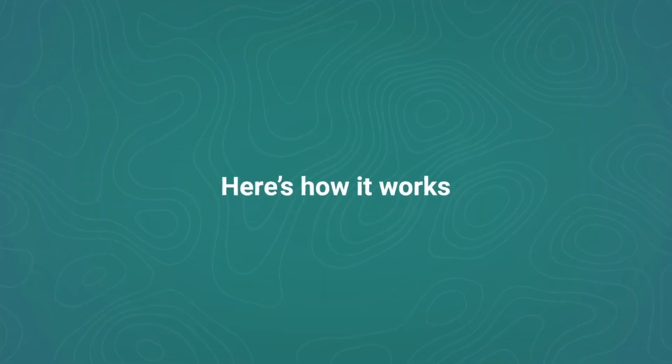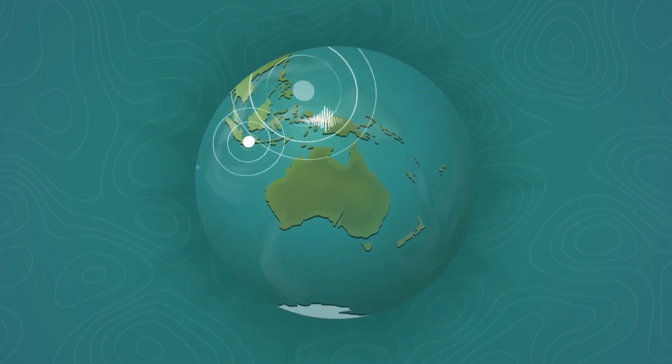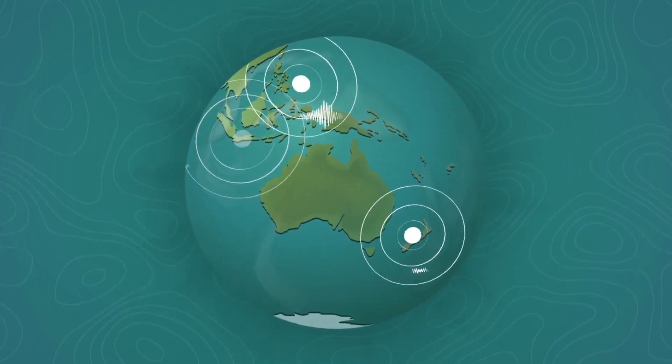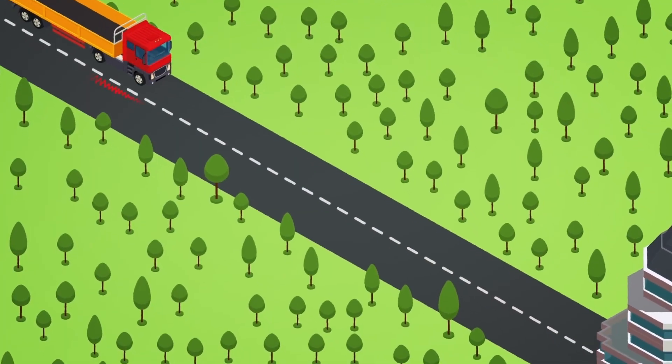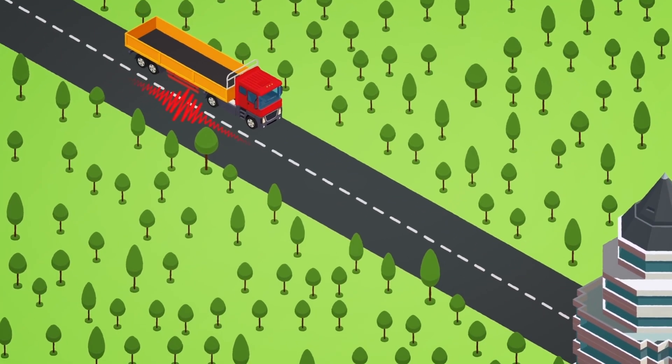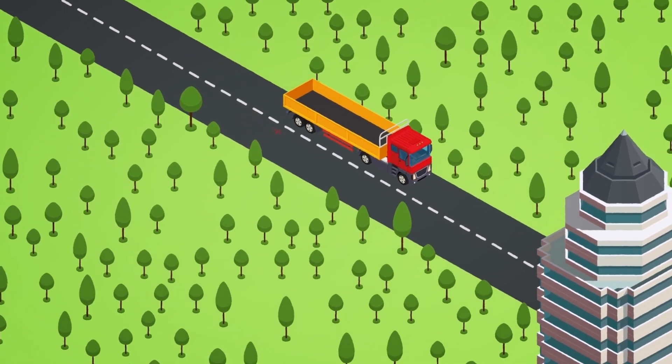Here's how it works. Across the world, events such as earthquakes, mine and quarry blasts, ocean waves or even road traffic produce waves of energy that travel through the Earth. These are called seismic waves.